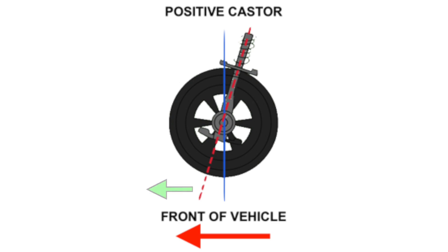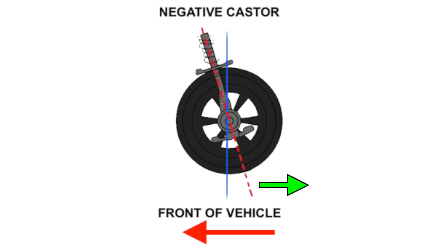The other way to adjust caster is to adjust the bottom of your suspension — bringing it forward or backwards, essentially pulling the front wheels of your car forward or backwards. If you bring your front wheels forward, that will increase caster, the same as bringing your top suspension mount backwards. If you move your front wheels backwards in the arch, that's the same as bringing your top mount forward, which will decrease caster.